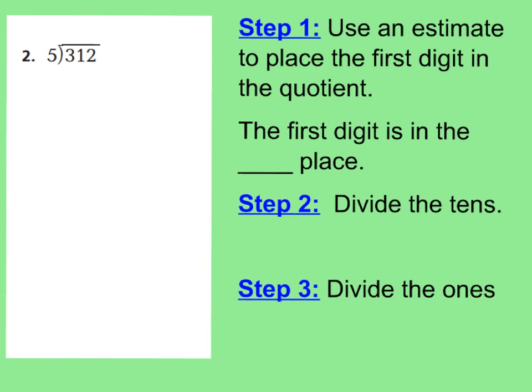Our first step is to figure out where we're going to place our first digit in our quotient. If I look at 312 divided by 5, I know that 312 is close to 300, and I can divide 300 by 5. 300 divided by 5 is 60, because 60 times 5 is 300. Therefore, I know my answer needs to be a little bit above 60. That's how we can estimate. The first digit is going to go right above my tens place, because I'm estimating the quotient to be about 60 — a number in the tens place.